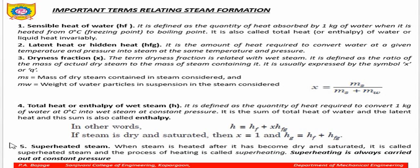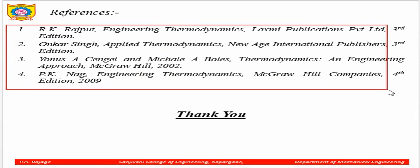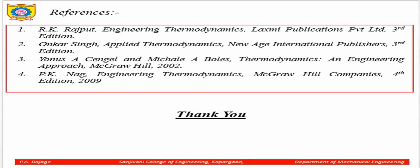Next is superheated steam. When steam has become dry and saturated — meaning it does not contain any moisture — and you add even more heat, it will superheat the steam. Superheating is always carried out at constant pressure. Thank you friends, thank you very much.